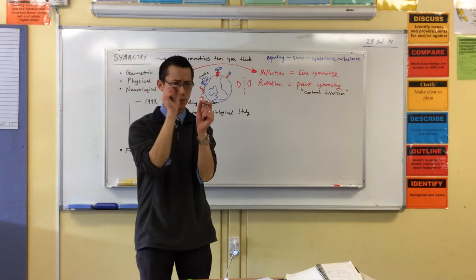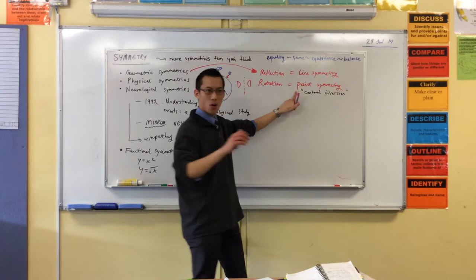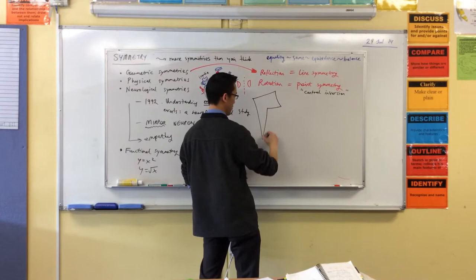Rotations are hard to do. They're quite hard to do. You need protractors and stuff like that. But you can actually do point symmetry without any angles whatsoever. Draw yourself a shape, any shape you like. I'm going to do something like... Here's a shape.